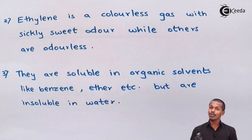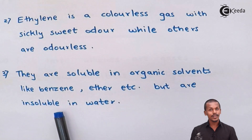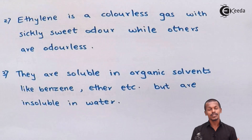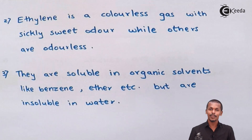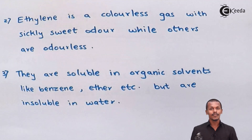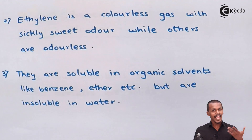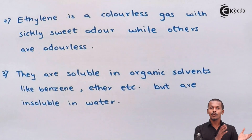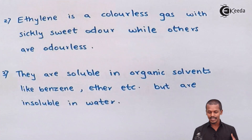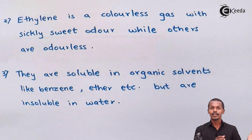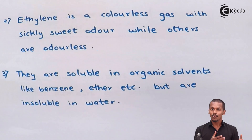Alkenes are not soluble in polar solvents like water, because water is polar in nature while hydrocarbons are non-polar, and benzene is also non-polar. As we know, the concept is that polar dissolves polar and non-polar dissolves non-polar, so alkenes are soluble in non-polar organic solvents like benzene but not in water.